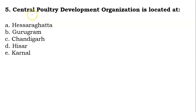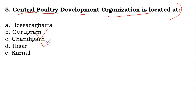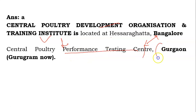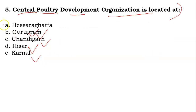The fifth question: Central Poultry Development Organization is located at which place? Options are Hesarghatta, Gurugram, Chandigarh, Hisar, or Karnal. The answer is A — Central Poultry Development Organization and Training Institute is located at Hesarghatta, which is in Bangalore. One additional piece of information: Central Poultry Performance Testing Center is located at Gurgaon, now known as Gurugram.